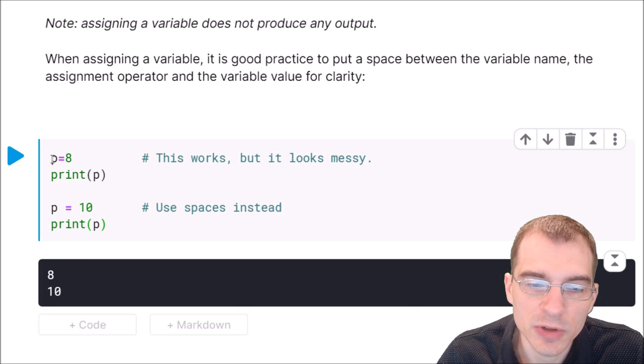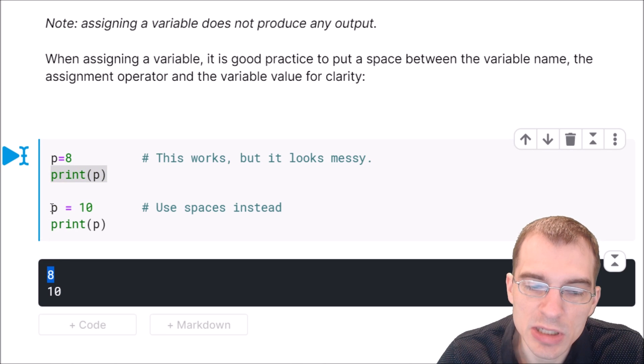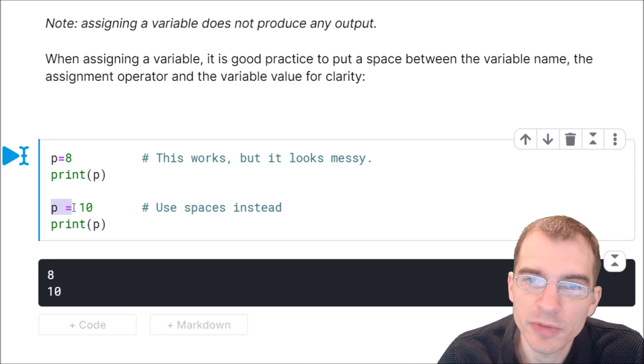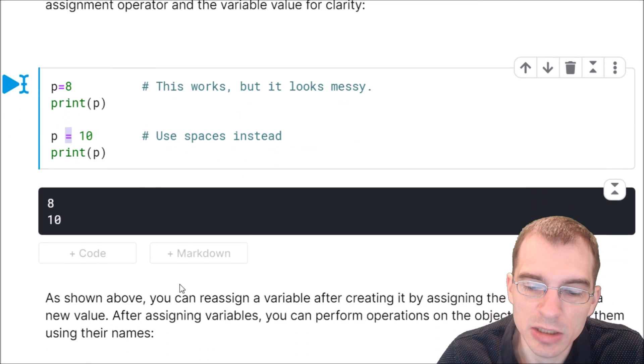You'll also notice here first we set p equal to the value 8, and then below we set p equal to the value 10. When we printed them, the value of p at first in this first print statement was 8, but then we reassigned it by using another variable assignment here to 10. So after you assign a variable initially, you can reassign it by using the equal sign again later.